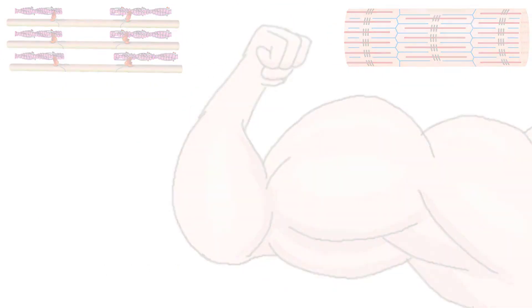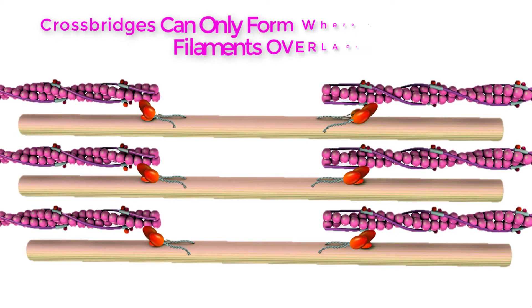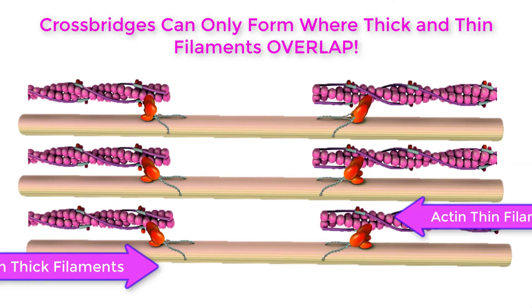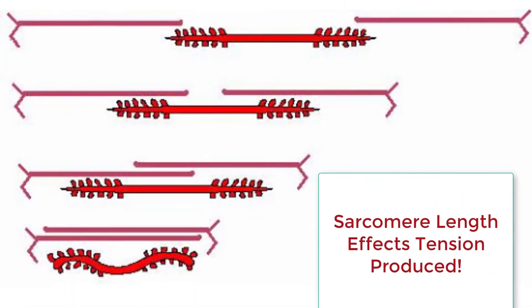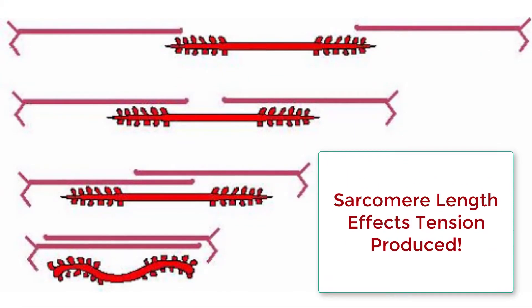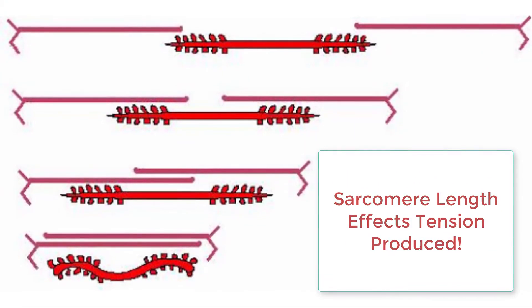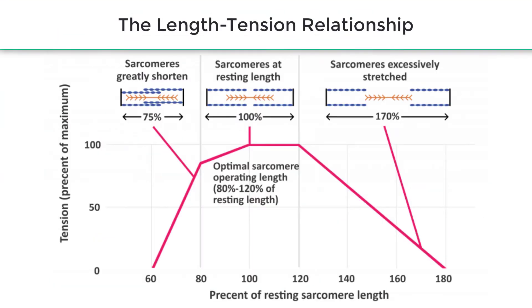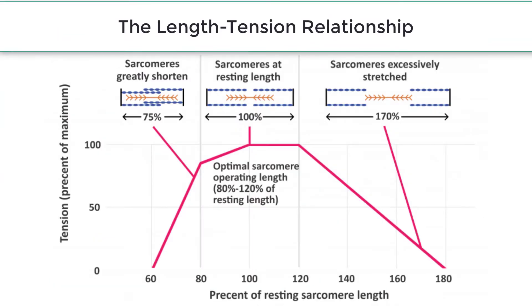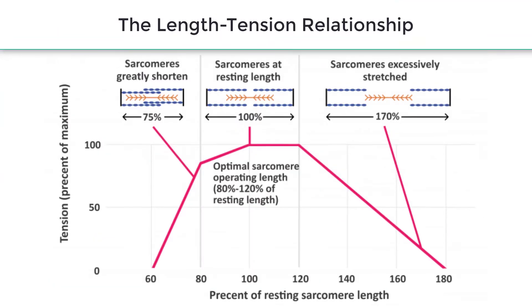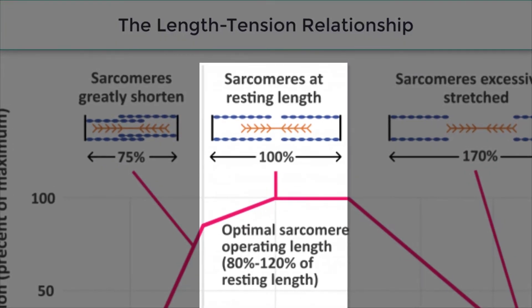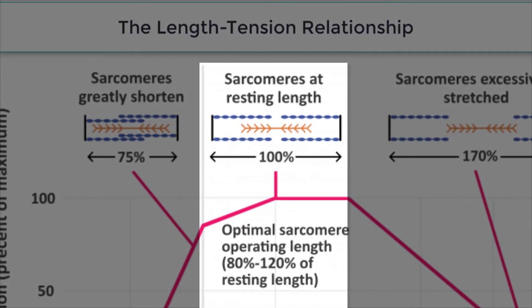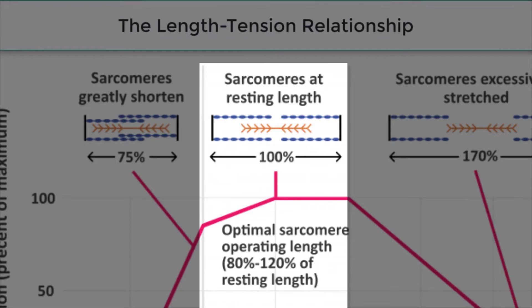Cross-bridges can only form where thin and thick filaments already overlap, so the length of the sarcomere has a direct influence on the force generated when the sarcomere shortens. This is called the length-tension relationship. The ideal length of a sarcomere to produce maximal tension occurs at 80% to 120% of its resting length.